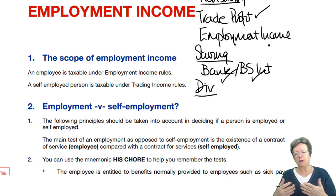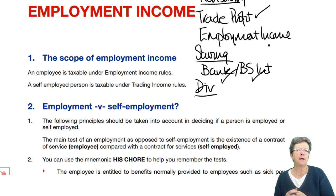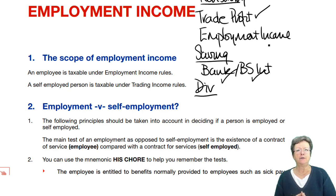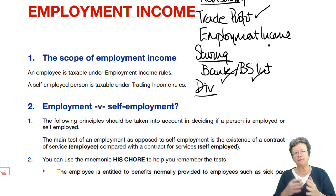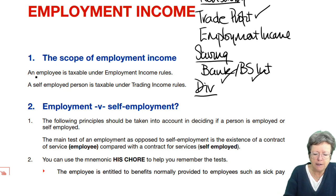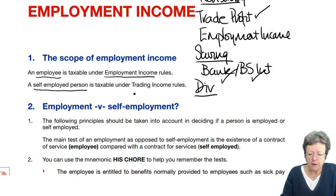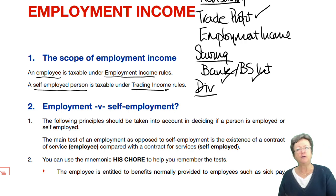The national insurance contributions that you pay are different. The rate for tax is exactly the same and the personal allowance is the same, but the national insurance is different. So people will have argued with the revenue that they are one or the other, whichever suits them. Over a period of time, there have come in some principles and laws, followed by legal cases, which thankfully you don't need to know, which have tried to define whether somebody is employed or self-employed.